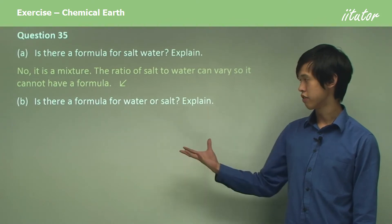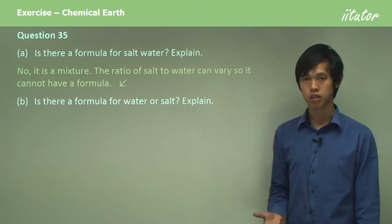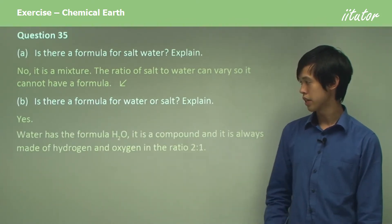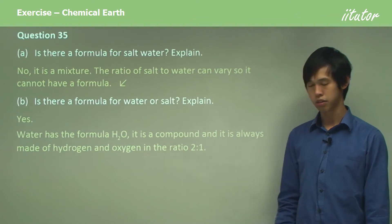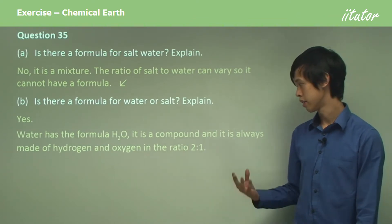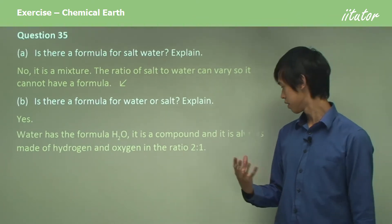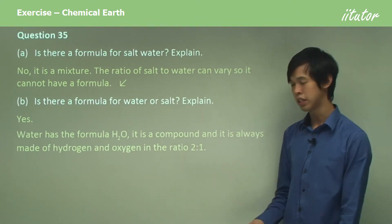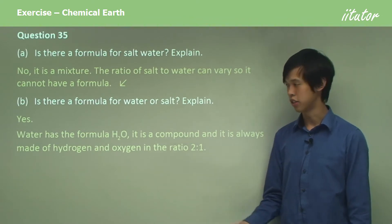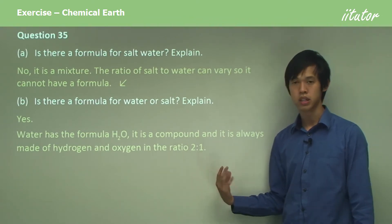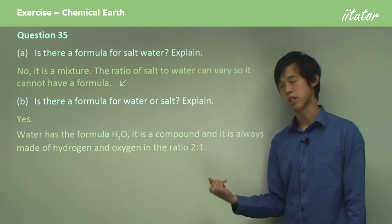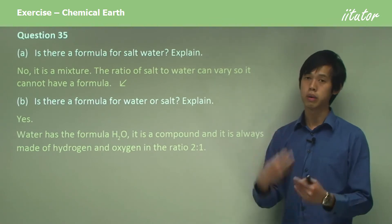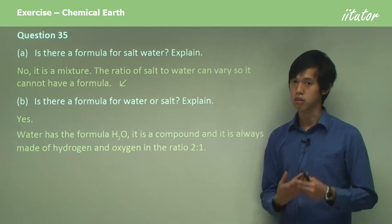Is there a formula for water or salt? Explain. Yes. Water has the formula H₂O. It's a compound and it's always made of hydrogen and oxygen in the ratio of 2 to 1. So there's always two hydrogen atoms for every one oxygen atom — that always happens for all water.